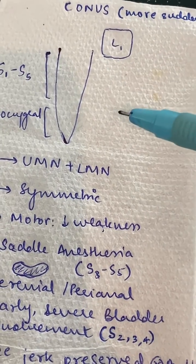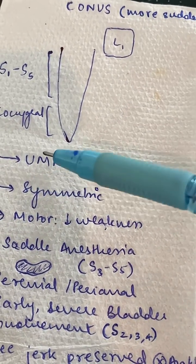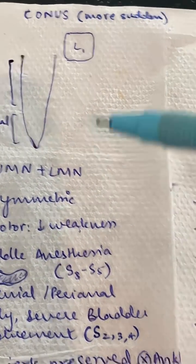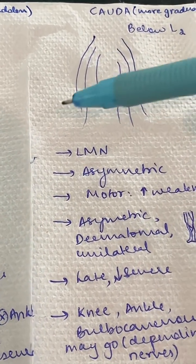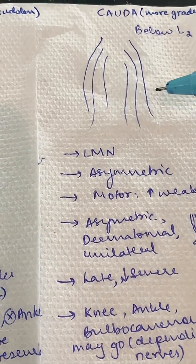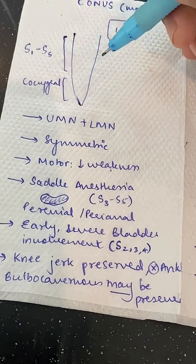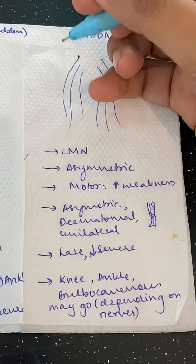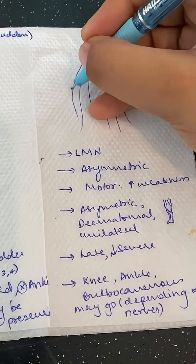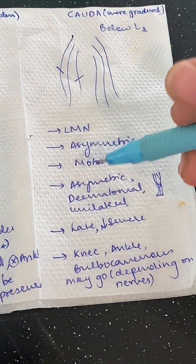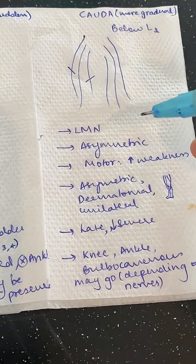In conus medullaris, the spinal cord and spinal nerves are involved, so both UMN and LMN signs can be seen. Whereas in cauda equina you will only see LMN signs because only the roots are involved. And since the cord is involved as a whole, lesions are usually symmetric, whereas in cauda equina you might have a lesion here or there, so it's usually asymmetric.